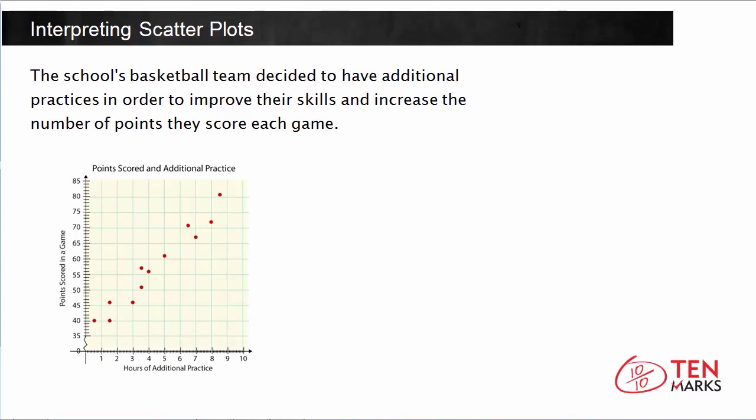The school's basketball team decided to have additional practices in order to improve their skills and increase the number of points they score each game. So what you have here is a scatter plot that shows the relationship between the hours of additional practice and the number of points scored in a game. So the x-axis shows you the number of additional practice hours, whereas the y-axis has the number of points scored in each game.